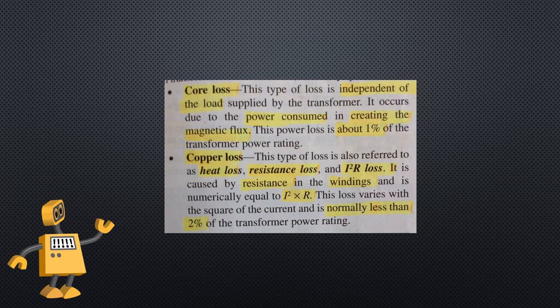Transformer efficiency. Transformers are highly efficient but do have some losses due to heating and power consumption within components. Two kinds of losses are inherent: first, core loss, which is independent of the load and caused by power consumed creating the magnetic flux—about 1% of the transformer power rating. Second, copper loss, also referred to as heat loss, resistance loss, or I²R loss, caused by resistance of the windings. This loss is numerically equal to I² × R, varies with the square of current, and is normally less than 2% of the transformer power rating.